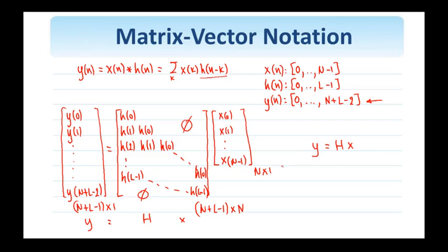We observe that H has this specific form, that is, the values along each diagonal are equal. And this is referred to as a Toeplitz matrix.